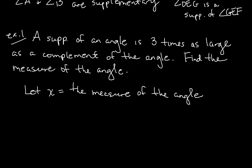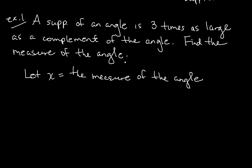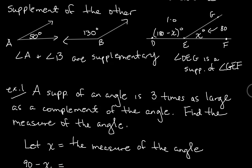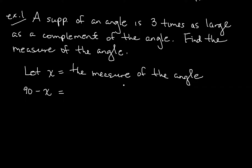Let's try an example — this is one of the harder types, a word problem. It says: a supplement of an angle is three times as large as the complement of the angle. Find the measure of the angle. Set up a heading: let X be the measure of the angle. The complement is 90 minus X, and the supplement is 180 minus X. Anytime you have one of these problems, if you need a complement use 90 minus the angle, and for a supplement use 180 minus the angle.